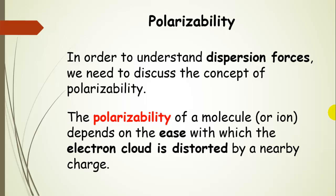Next we're going to talk about dispersion forces, also called London forces or Van der Waals forces. To understand them, we need to think about polarizability — basically the ease with which the electron cloud can be distorted by a nearby charge. The electron cloud has a negative charge, so if a negative charge comes close, it repels and moves away; if a positive charge comes close, it is attracted. This is the polarizability of the electron cloud.